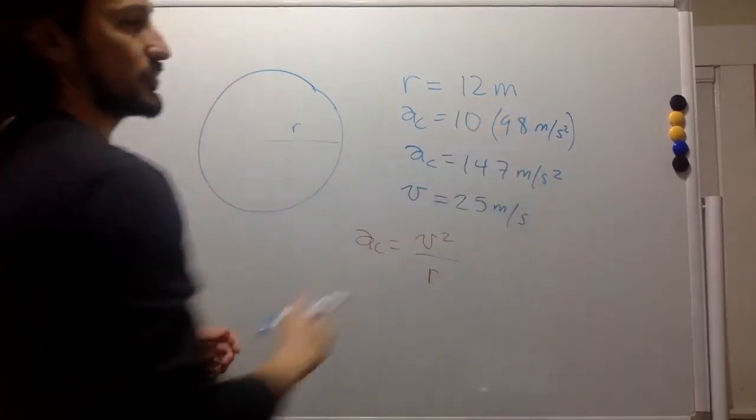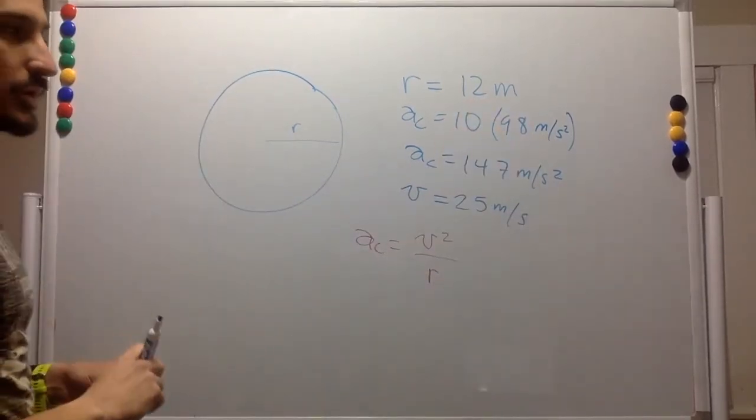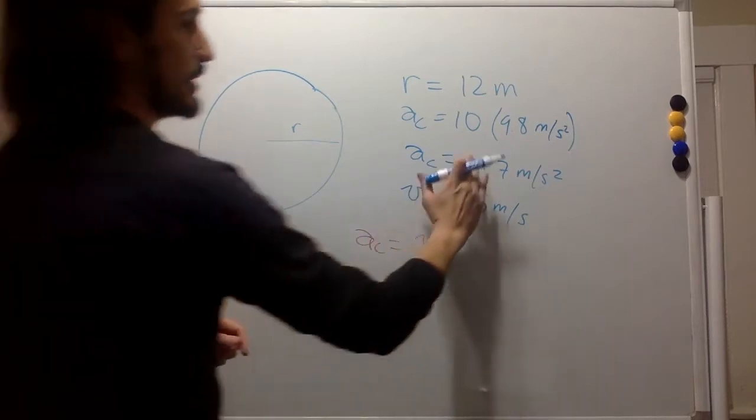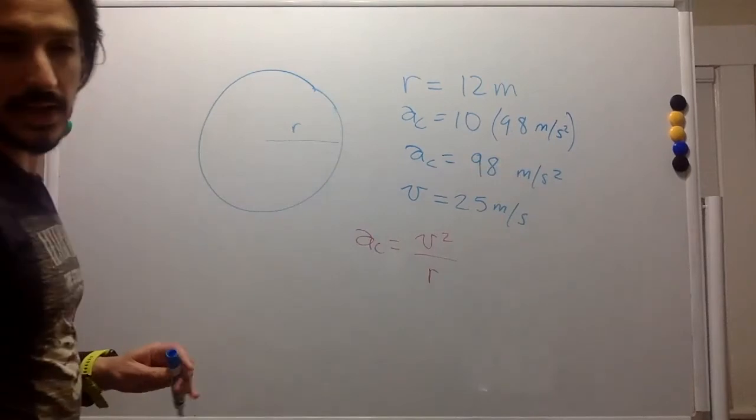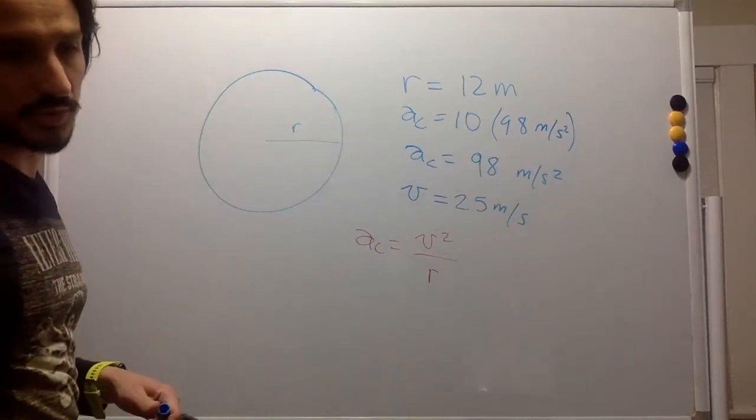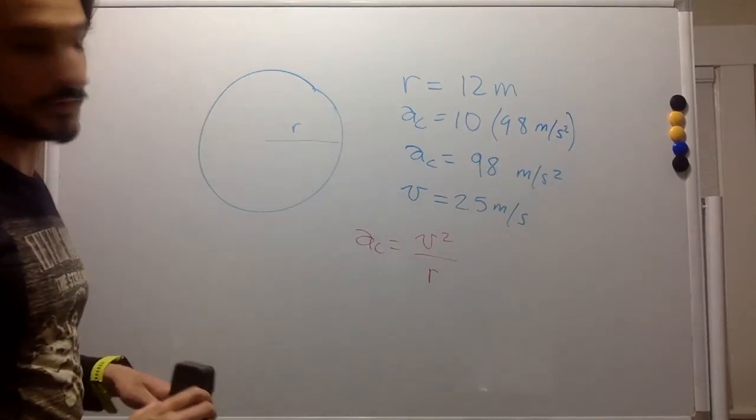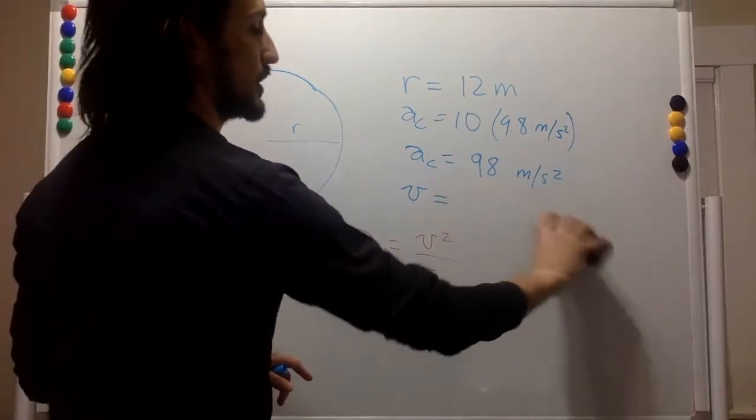So 10 times 9.8 meters per second squared, that will be 98 meters per second squared. And we want to know the speed.